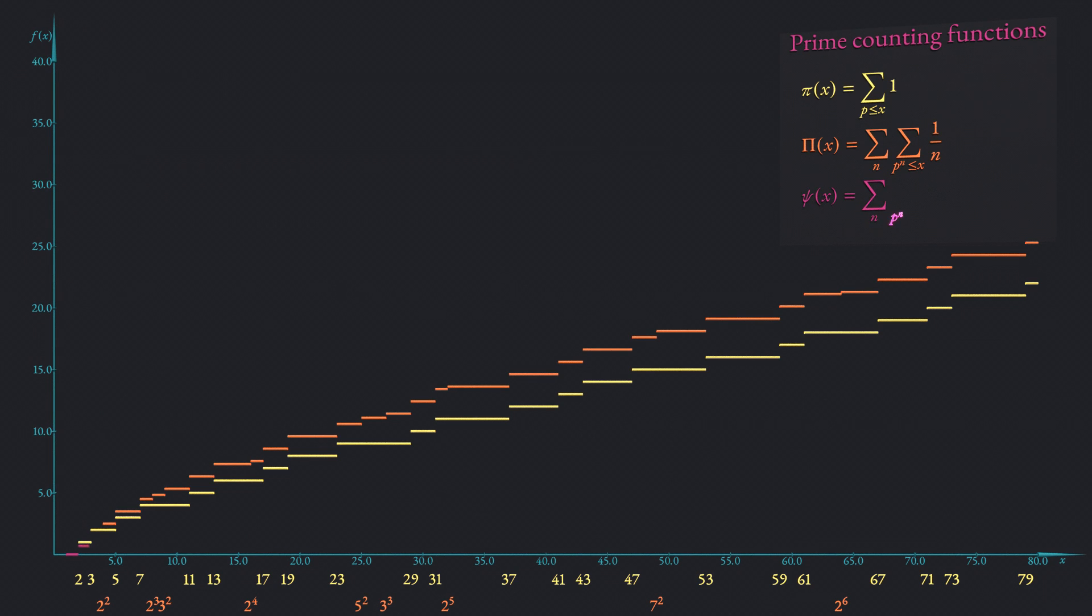In this video a third prime counting function denoted with the Greek letter ψ is the function of choice. It steps up at every prime value and at values that are powers of primes much like Riemann's prime counting function. However, the step size is always given by the logarithm of the corresponding prime no matter whether it is a prime or a power of a prime. Two step sizes are shown in the diagram as explanation. At 31 the step size is the logarithm of 31 since it is a prime number. At 32 however, the step size is the logarithm of 2 since 32 can be expressed as the fifth power of 2.